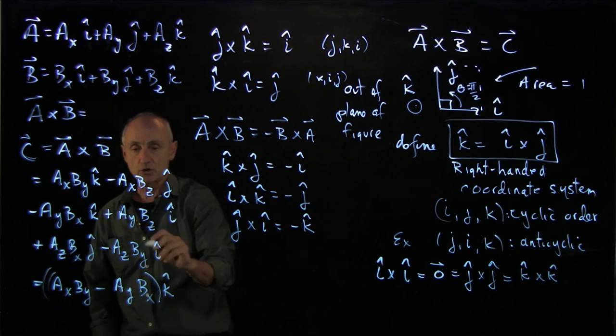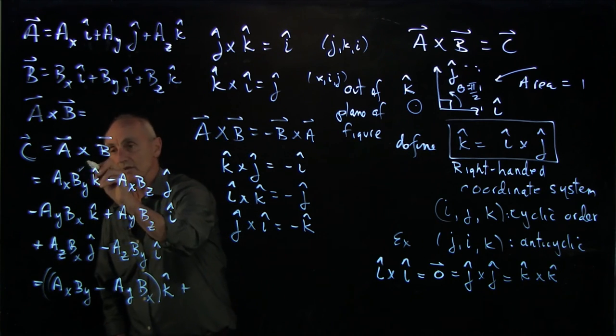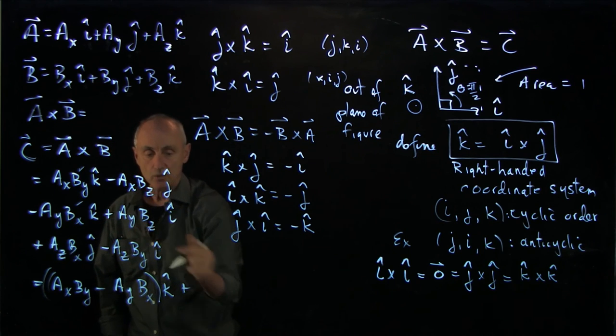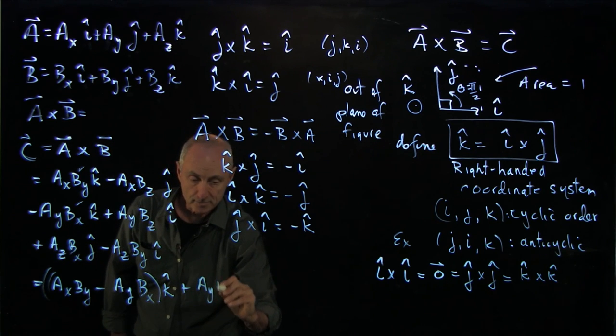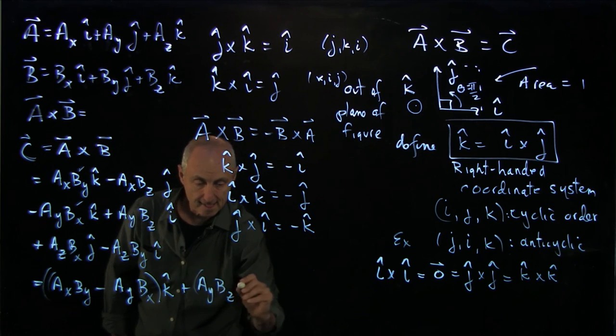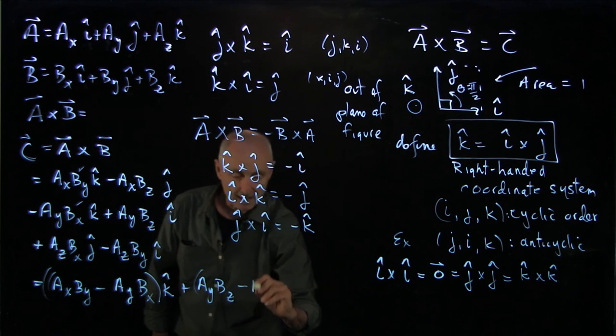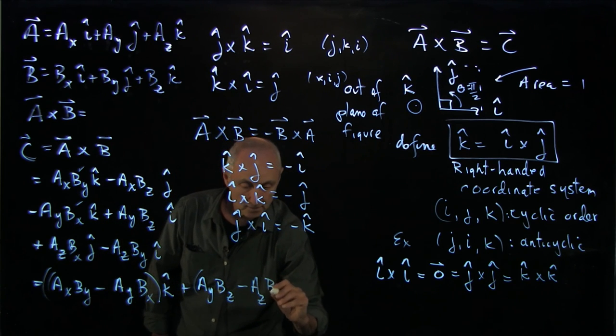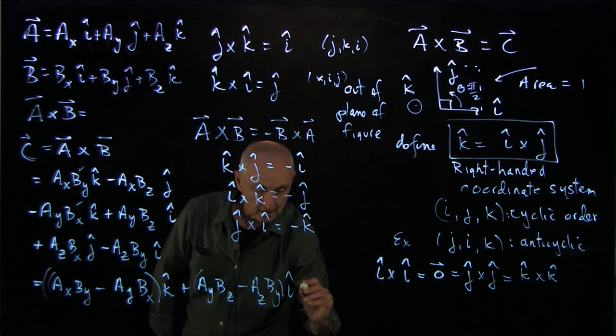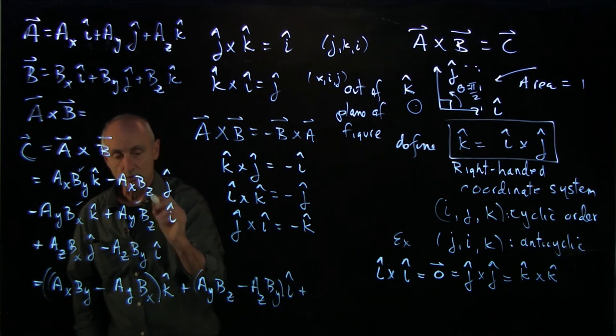And now let's look at the i hat terms. I'll just check those off. We have ay bz minus az by i hat. And check those two terms off.